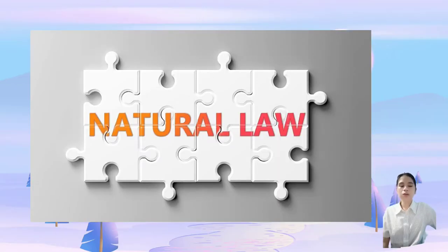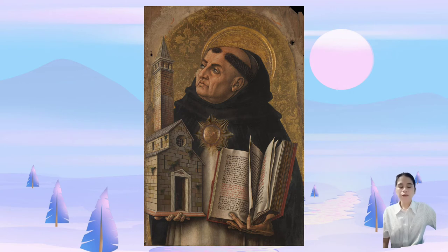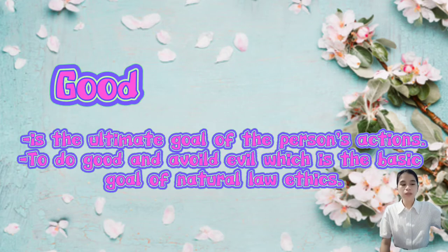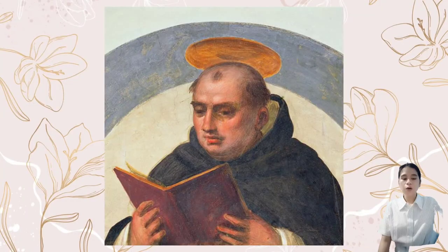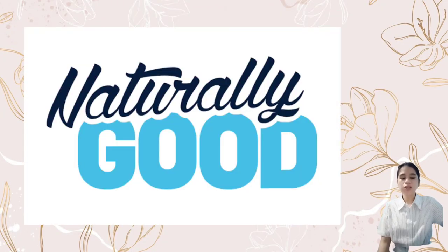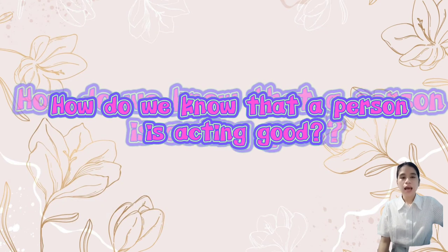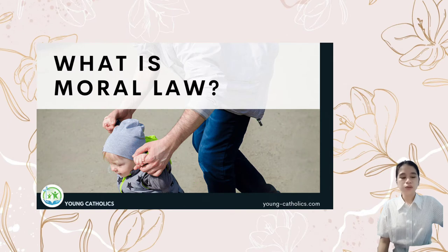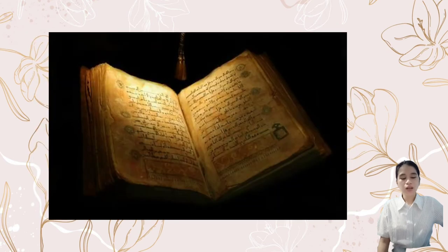Natural law ethics, also called deontological ethics, is a model of ethics developed by St. Thomas Aquinas, a philosopher of the medieval period who focused on religion. In natural law ethics, reason is the source of the moral law. It directs us towards the good, which is the ultimate goal of a person's action — to do good and avoid evil. According to Aquinas, we are naturally good, and an act is morally right if it is done in accordance with the moral law. The moral law is the dictate of reason, and Aquinas says it comes from God's eternal law, revealed in divine law and expressed in human nature.